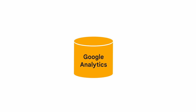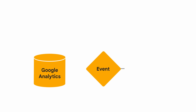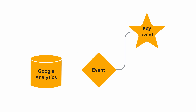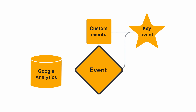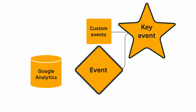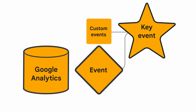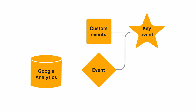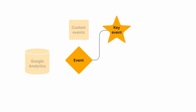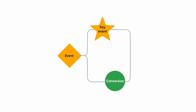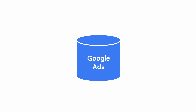So how are these related? In Google Analytics, you can mark any event as a key event. You can create custom events and mark those as key events too. Events and key events are both concepts created and reported in Google Analytics. You can also use any event or key event to create a conversion, which is shared with Google Ads. Once you use an event to create a conversion, it also automatically becomes a key event too.